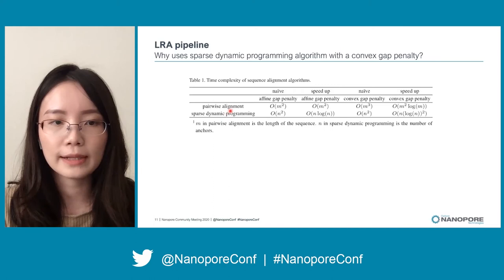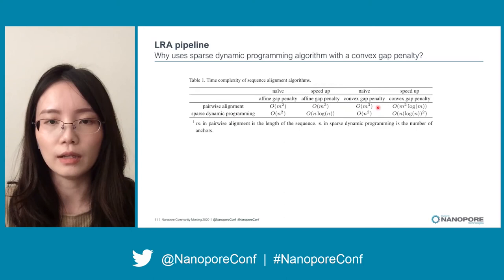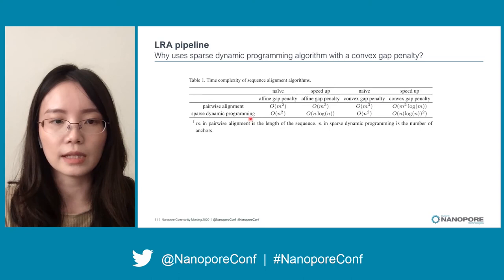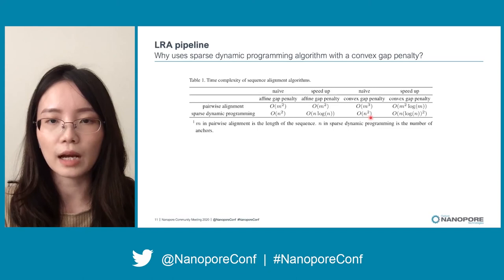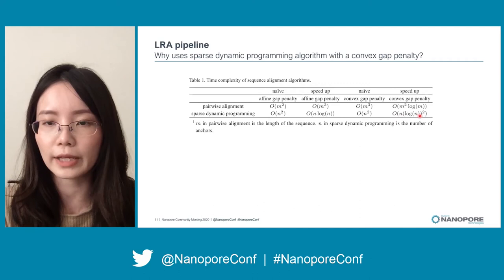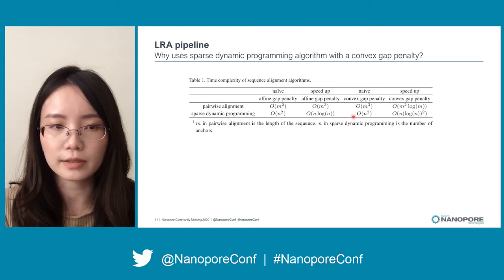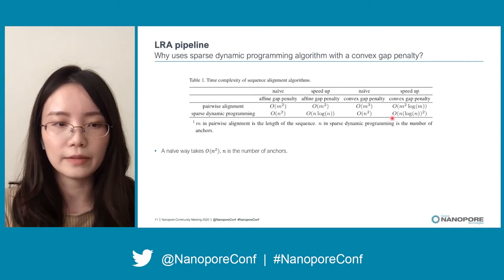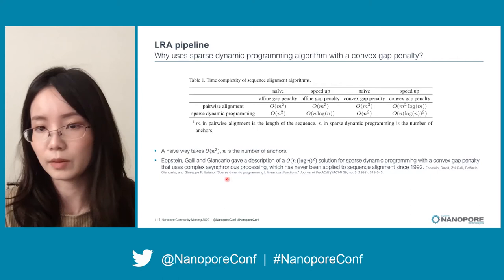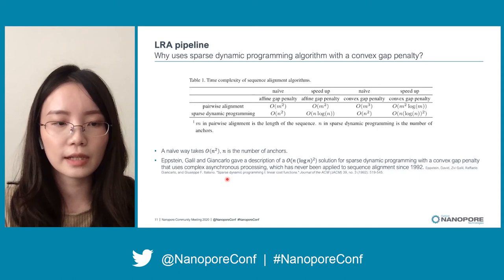From this table, we can see that with convex gap penalty, naive pairwise alignment takes O(m³) time where m is the length of the sequence, and this can be sped up to O(m² log m) time. With convex gap penalty, naive sparse dynamic programming takes O(n²) time where n is the number of anchors, and this can be sped up to O(n log²n) time. Clearly, sparse dynamic programming with convex gap penalty is more efficient than pairwise alignment because m is much larger than n. Epstein, Galil, and Giancarlo gave a description of the O(n log²n) solution for sparse dynamic programming with a convex gap penalty.